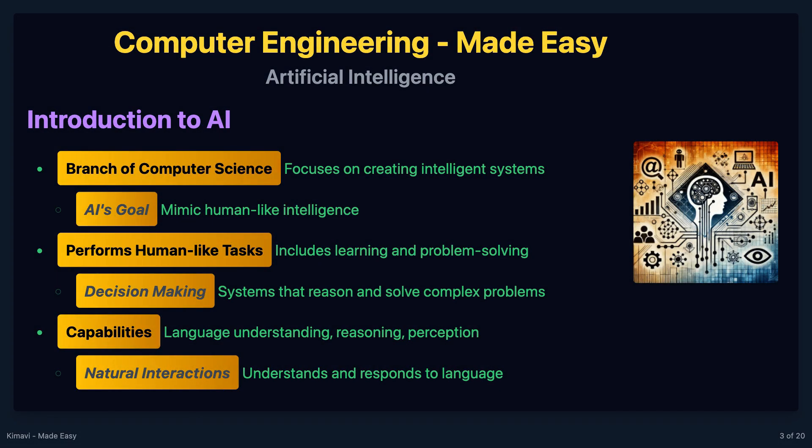Artificial intelligence, or AI, is a branch of computer science that aims to create systems capable of performing tasks that normally require human intelligence. These tasks include learning, reasoning, problem-solving, perception, and language understanding.